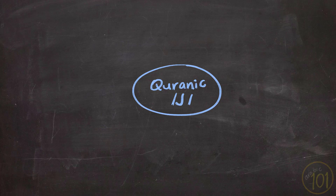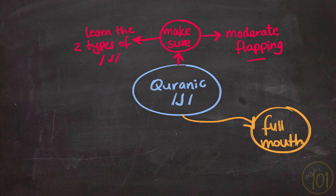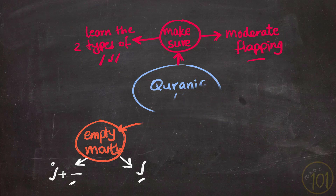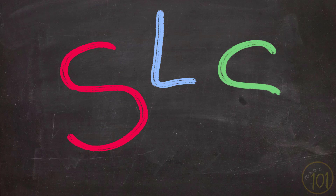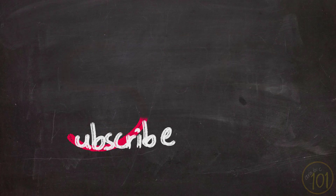To recap: Ra in the Holy Qur'an — make sure that you don't do too much flapping or too little, and make sure you understand the difference between full mouth Ra and empty mouth Ra, and know how to pronounce them properly. For full mouth Ra there are two cases: if Ra itself has Fathah or Dhamma, or if Ra has Sukoon but the letter before Ra has Fathah or Dhamma. Ra will be empty mouth if it has Kasra, or if Ra has Sukoon and the letter before it has Kasra.